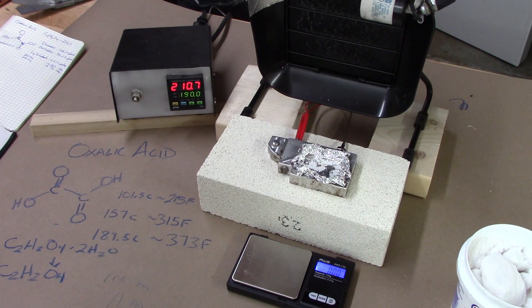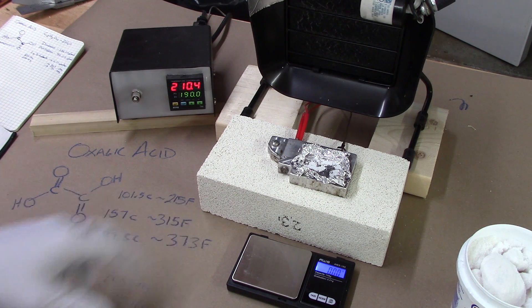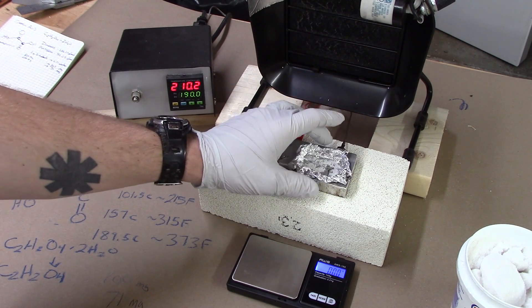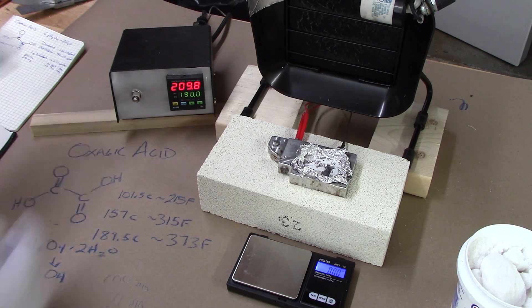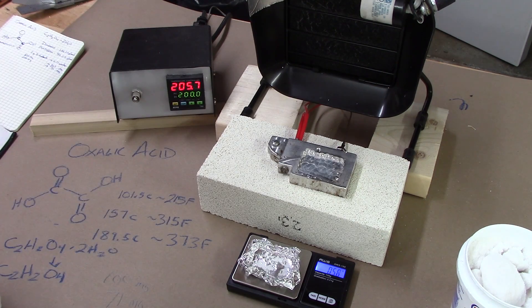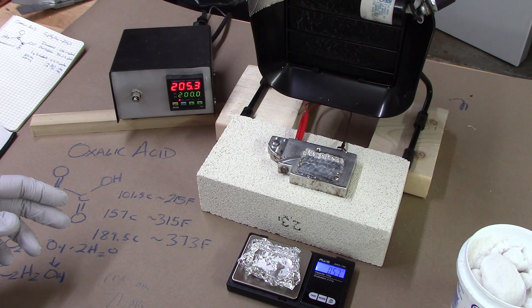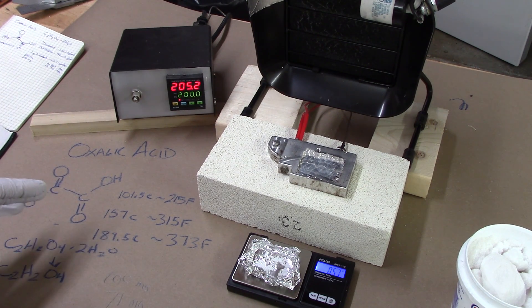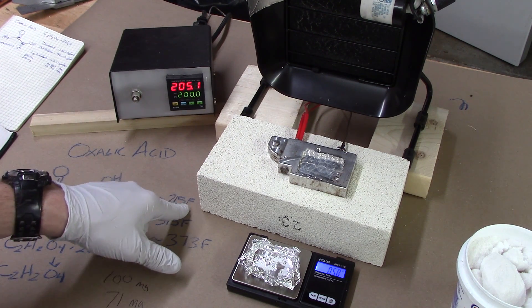Okay, 210 degrees, so we're just under that point of 215 Fahrenheit. It doesn't look much different. I'm going to let it sit here a little bit, and then we'll get a weight. Okay, so we're at 0.56, 0.57 grams.